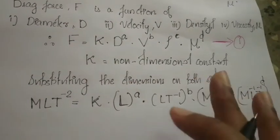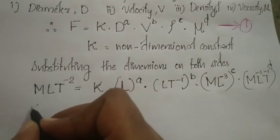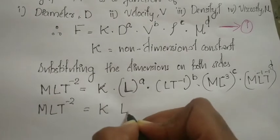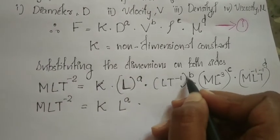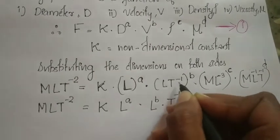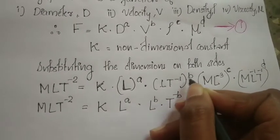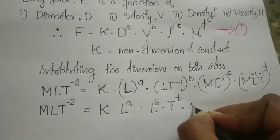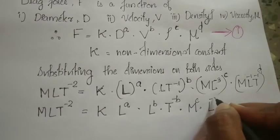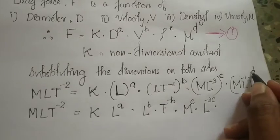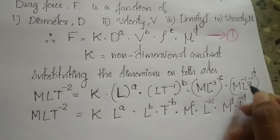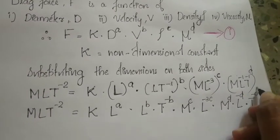Substituting dimensions on both sides: M L T raised to minus 2 equals K into L raised to a, into L T raised to minus 1 whole raised to b, into L raised to b into T raised to minus b, into M raised to c into L raised to minus 3c, into M raised to d into L raised to minus d into T raised to minus d.